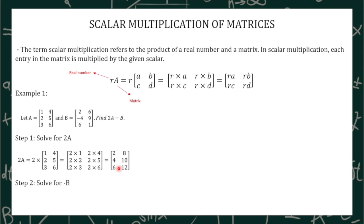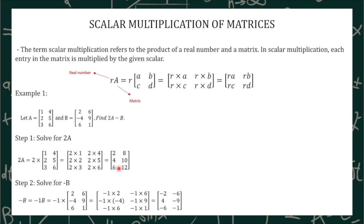Then we need to solve for negative B. Here in negative B, we have a hidden 1, so negative B is also equal to negative 1 times B, and negative 1 is our real number. We need to multiply our real number to the matrix itself. Negative 1 times 2 will become -2, negative 1 times 6 will become -6, negative 1 times -4 will become 4, negative 1 times 9 will become -9, negative 1 times 6 will become -6, and negative 1 times 1 will become -1.